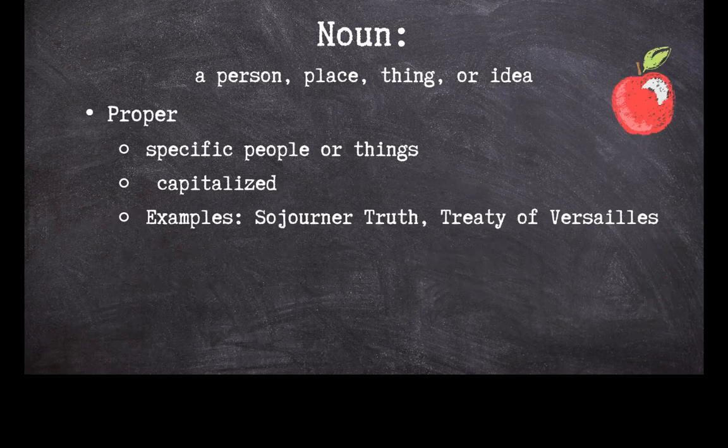Proper nouns identify specific people or things. We capitalize these when writing them. Sojourner Truth, a U.S. abolitionist and women's rights activist, is an example of a proper noun — Sojourner Truth is a specific person's name. The Treaty of Versailles, which formally ended World War I in 1919, is also a proper noun. It's the name of a specific document.